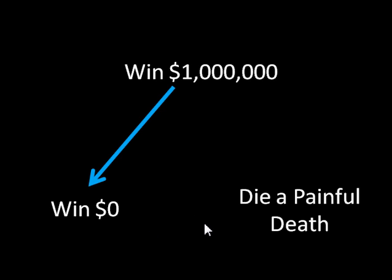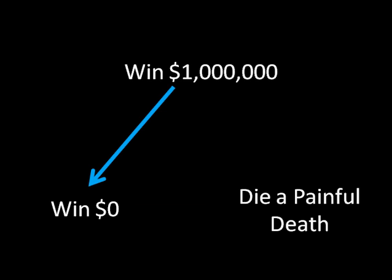Obviously, a sensible answer would be to include things like this, because that's what a sensible person would say — I would have a hard time finding someone who would disagree with this preference ordering. But we actually need to have these arrows here. We can't just leave it blank; you actually have to draw everything out just like this.